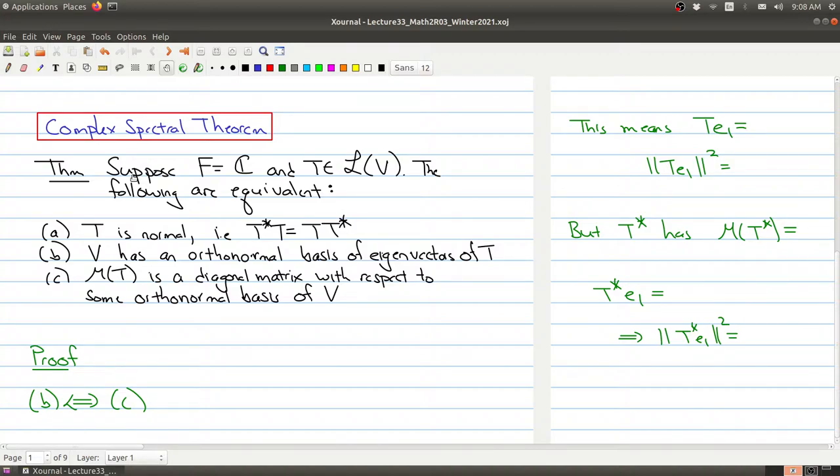So what does this theorem say? Suppose that your vector space is over the complex numbers and T is a linear operator on your vector space. Then the following are equivalent.